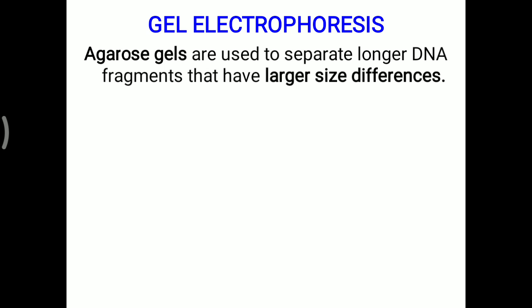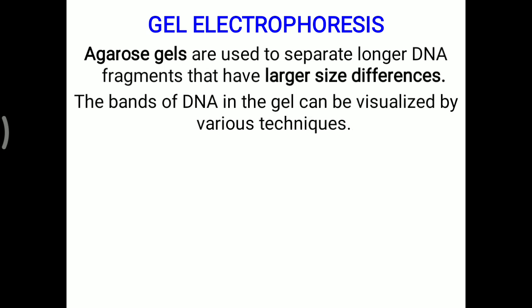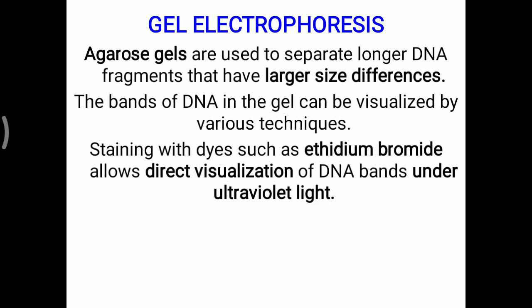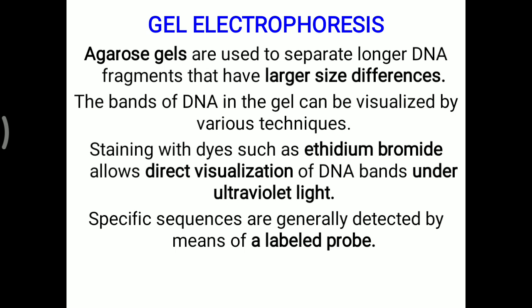Agarose gels are used to separate longer DNA fragments that have a larger size difference. The bands of DNA in the gel can be visualized by various techniques, since DNA is not visible to the naked eye. Staining with dyes such as ethidium bromide allows direct visualization of DNA bands under ultraviolet light. Once separation is confirmed, specific sequences can be detected by means of a labeled probe to determine whether a particular DNA sequence is present.